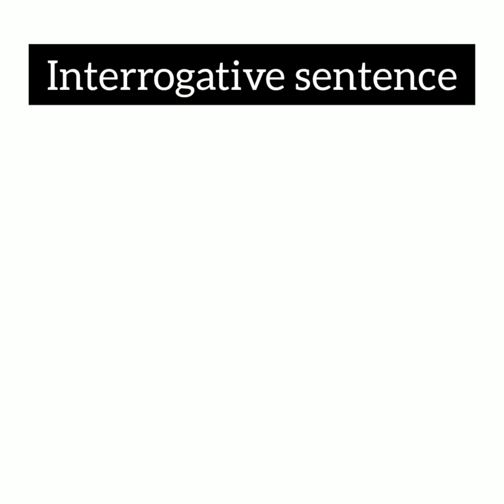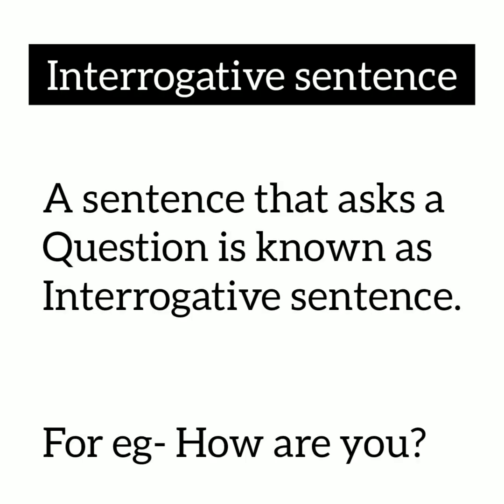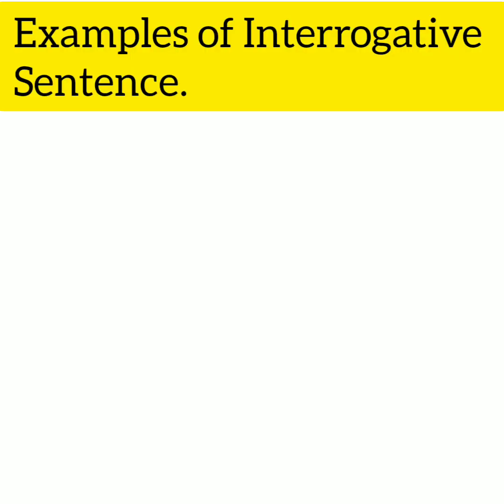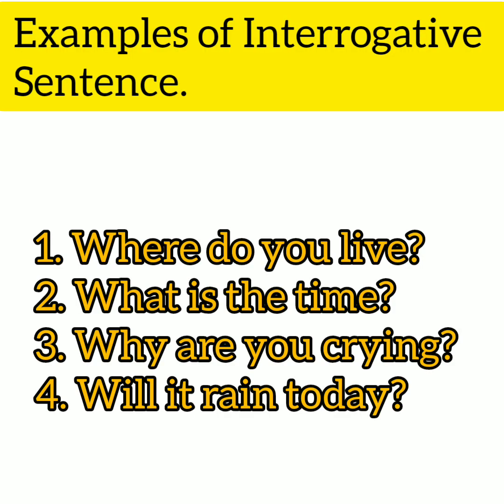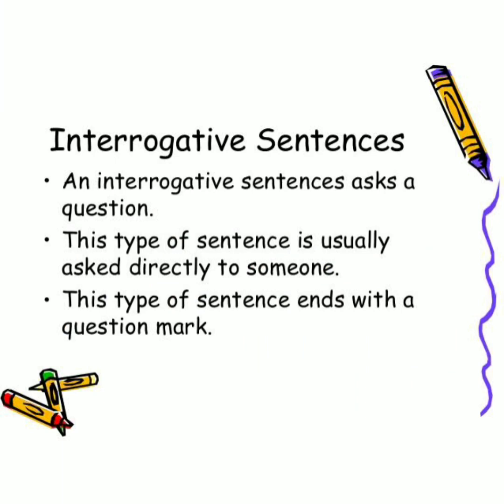Next up is the interrogative sentence. A sentence that asks a question is called an interrogative sentence. For example: 'How are you?' 'Where do you live?' 'What is the time?' 'Why are you crying?' 'Will it rain today?' Interrogative sentences ask direct questions, usually directed to the person standing in front of you. This type of sentence ends with a question mark.